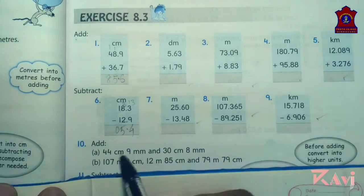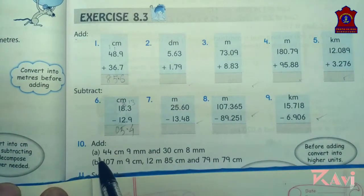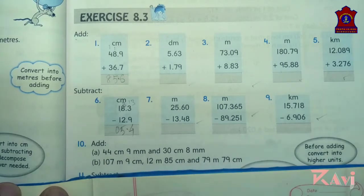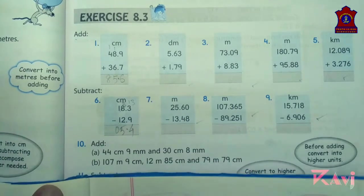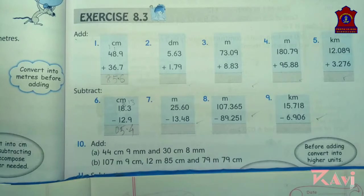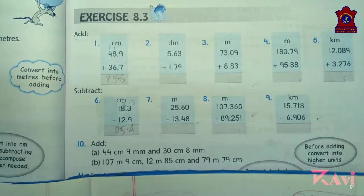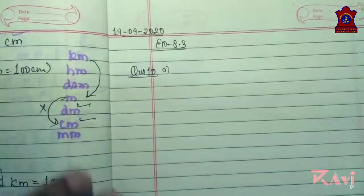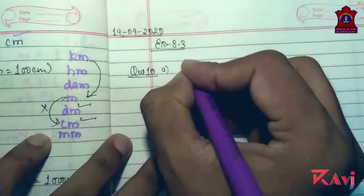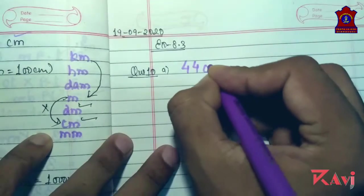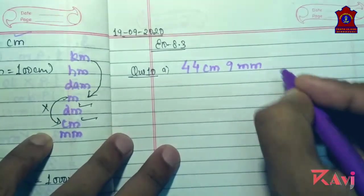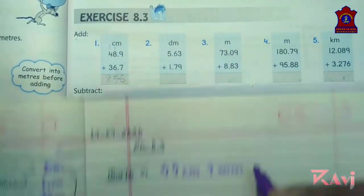See here in this question, question number A, we will be arranging this in column and then we will add. Let's do question number A today. 44 centimeter 9 millimeter, and 30 centimeter 8 millimeter.